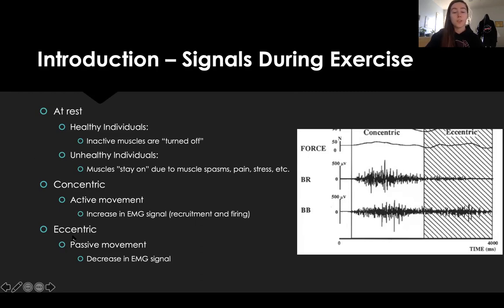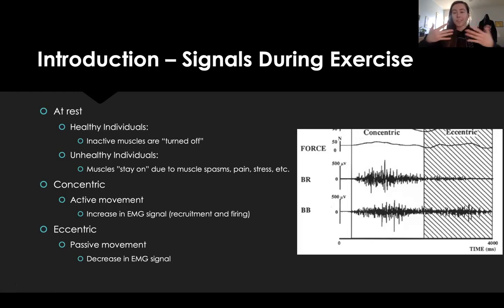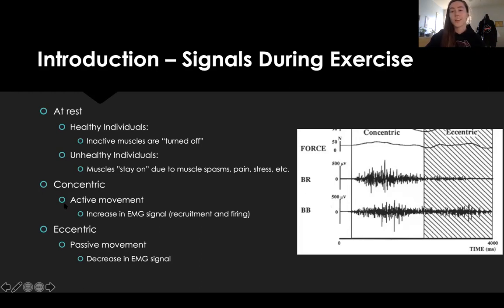Concentric versus eccentric in EMG: you can see in this picture that there's a lot more activation in concentric as compared to eccentric. As sarcomeres get longer during eccentric movement, there's less ability to use the muscle fiber — it's more of a passive movement, so you can't use as many muscle fibers as in an active concentric movement. So: concentric equals increased signal, eccentric equals decreased signal.